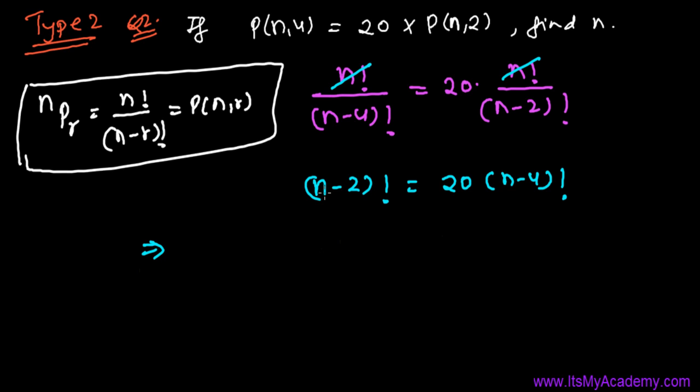Since n is bigger than (n-4), we can reduce (n-2) factorial down to the (n-4) level. So it's (n-2) times (n-3) times (n-4)! equals 20 times (n-4)!.